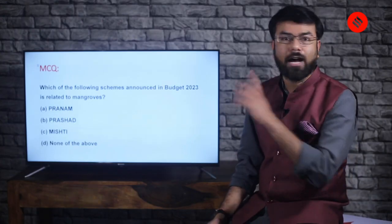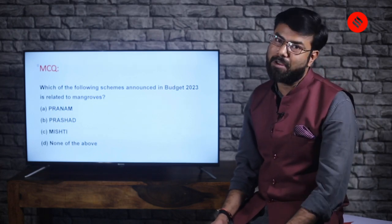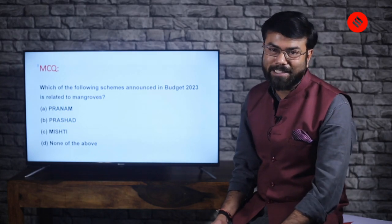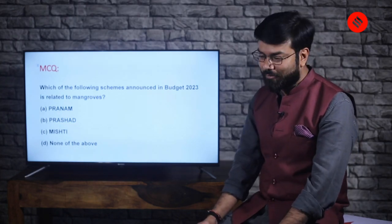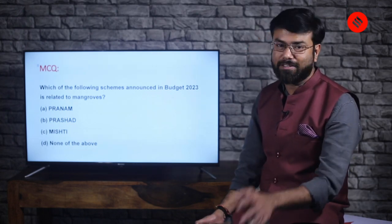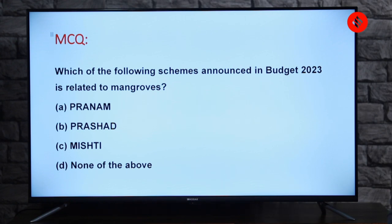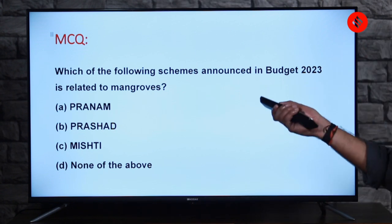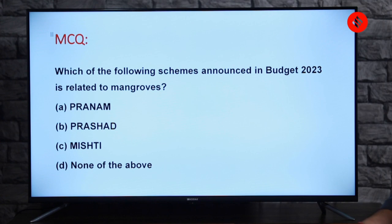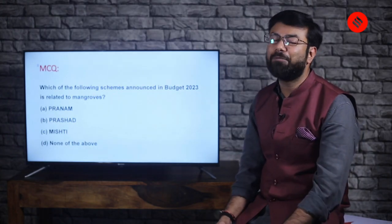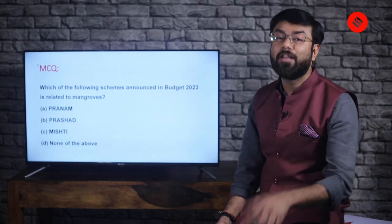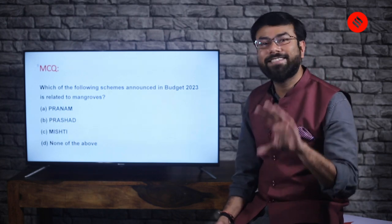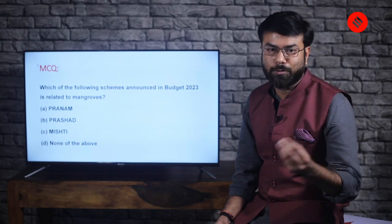Before going to priority five, one more MCQ — the easiest of the session. Which of the following schemes announced in budget 2023 is related to mangroves? The options are: PRANAM, MISHTI, none of the above. I request all of you to answer in the comment box — there is a lot of hint already in the question. Some questions in UPSC are like sweets — they are direct. Don't overthink.